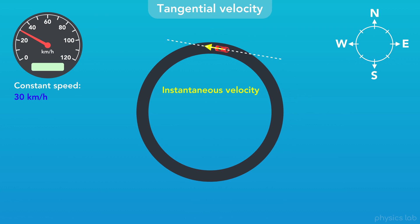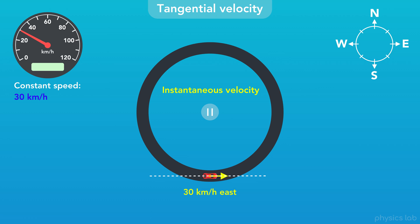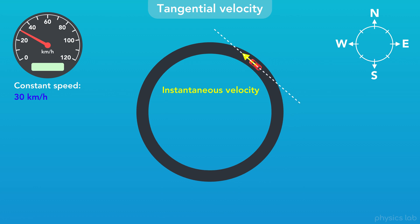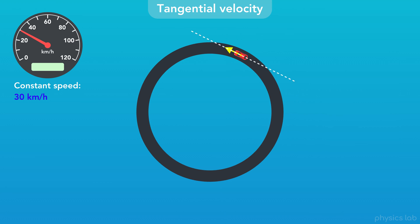Let's use a compass to help describe it. If we pause time when the car is here, the car is moving upwards, which is north — so the car's velocity at this instant is 30 kmph north. If we pause time when the car is here, the car is moving to the left, so the velocity is 30 kmph west. Here the car's velocity is 30 kmph south, and here it's 30 kmph east. The direction of instantaneous velocity is a concept you'll be expected to know.